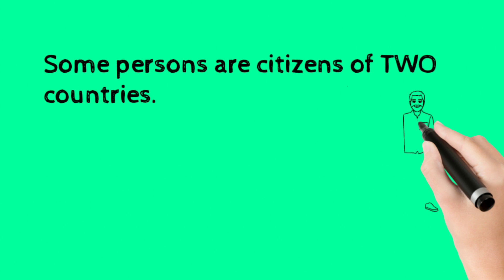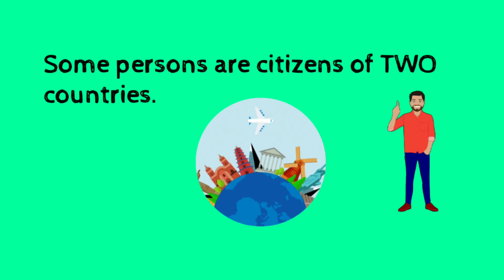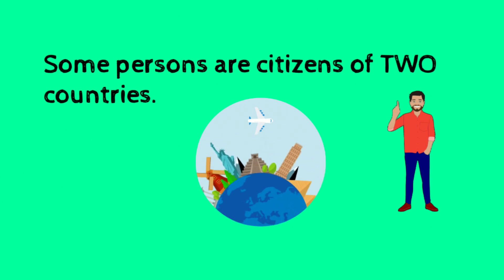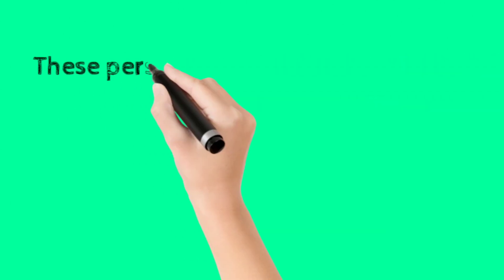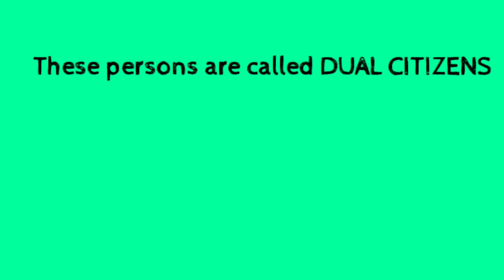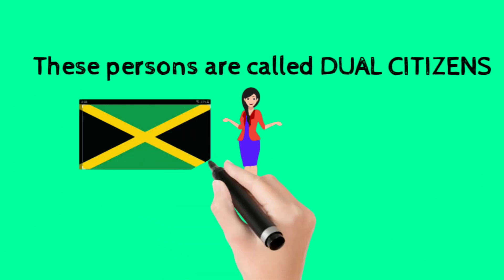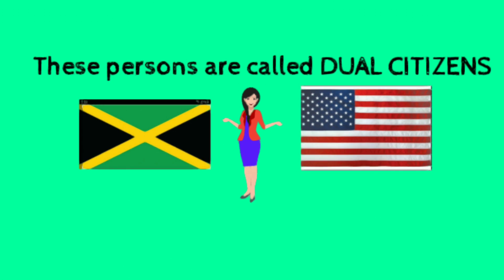Some persons are citizens of two countries. It is possible for you to have citizenship in two countries. So if you were born in a country and you moved to another country and acquired citizenship there, you can choose to retain your citizenship from your original country. In that case, you would be a dual citizen. Anybody that is a citizen of two countries is referred to as a dual citizen. For example, you might be a citizen of Jamaica and you moved to America and acquired citizenship there — then you become a dual citizen. The word dual, of course, means two, so that means you have two citizenships.